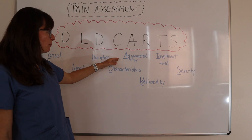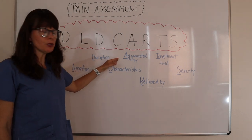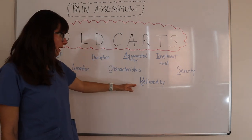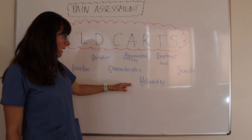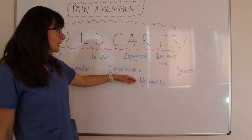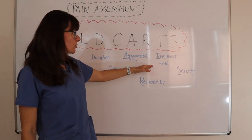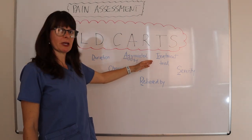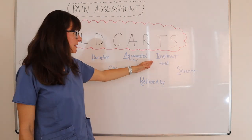A is Aggravated by — what makes the pain worse. R is Relieved by — what makes the pain better. T stands for Treatment tried, meaning what has the patient done to help relieve the symptoms.